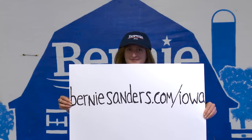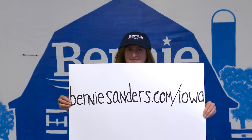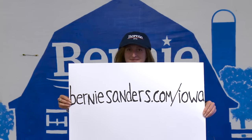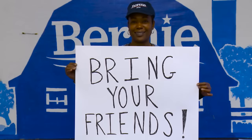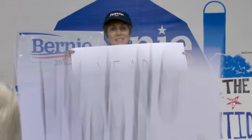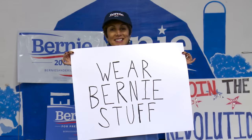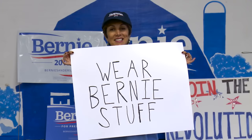You can find your caucus location at BernieSanders.com/Iowa. Bernie needs as much support as possible to win. Wearing campaign gear makes it easier to identify you as part of the group and may help build enthusiasm. The establishment doesn't think we'll show up on February 1st — in fact, they're counting on it. Prove them wrong and caucus for Bernie. It's gonna be awesome.